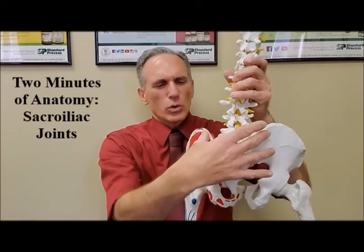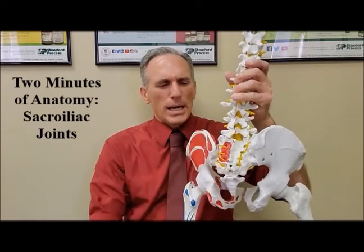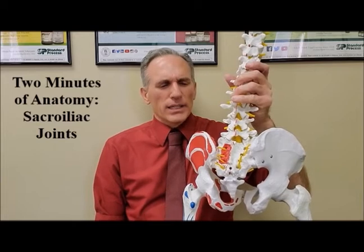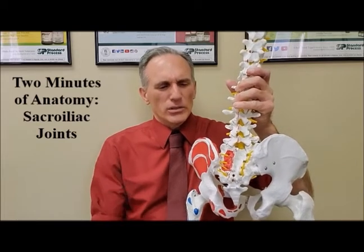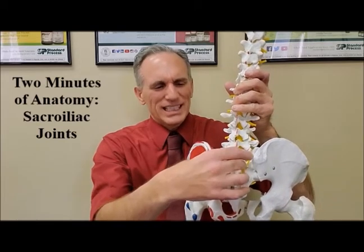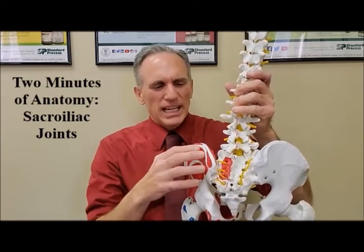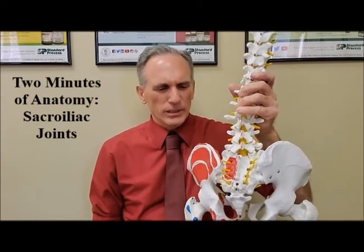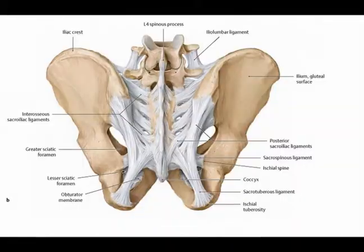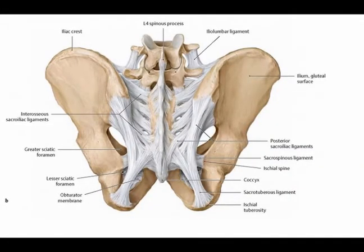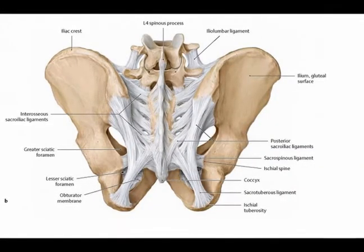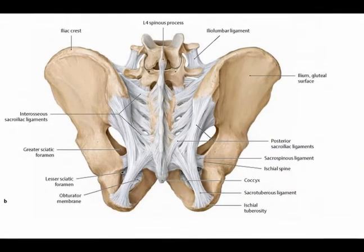The sacroiliac joints are located bilaterally. They are in articulation between the sacrum and the ilium, and they are stabilized by an extensive network of ligaments.